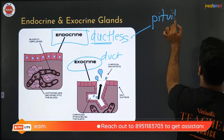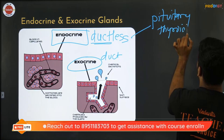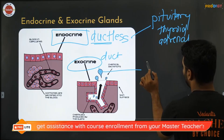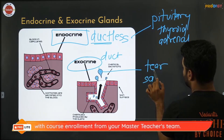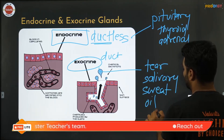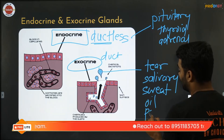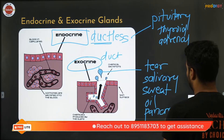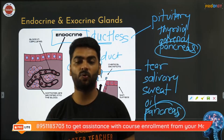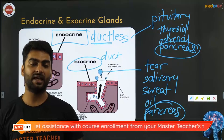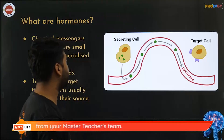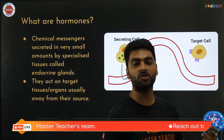Examples of endocrine glands: pituitary, thyroid, adrenal, etc. Exocrine glands include salivary glands, sweat glands, sebaceous glands. Importantly, the pancreas is both an endocrine as well as an exocrine gland — remember this. Now, what are hormones? How do we define them?